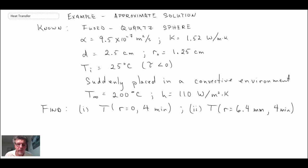So there is our problem statement written out. What we have is a fused quartz sphere, diameter 2.5 centimeters. We're told the thermal diffusivity α = 9.5×10⁻⁴ m²/h and thermal conductivity k = 1.52 W/m·K. Originally it's at 25°C and then it's suddenly placed in a convective environment of 200°C with convective heat transfer coefficient h = 110 W/m²·K. We are told to evaluate the temperature at the center line r = 0 at four minutes and also at some point off the center line, 6.4 millimeters, at that radial location also at four minutes.